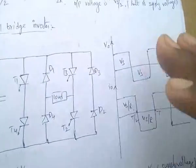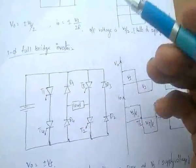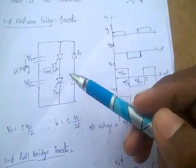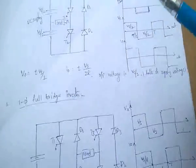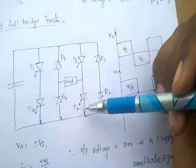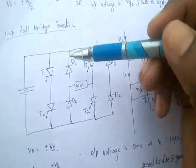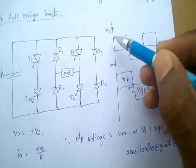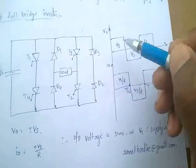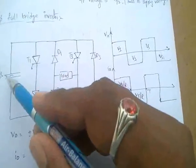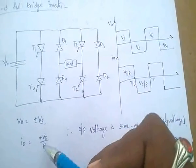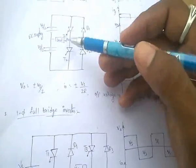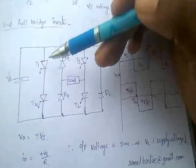In case of a full bridge inverter, the output voltage equals the supply voltage. In a single phase half-bridge inverter, two thyristors with two diodes form a bridge to convert DC to AC. In case of a full wave bridge inverter, there are four thyristors T1, T2, T3, T4 along with four diodes D1, D2, D3, D4. The output voltage V0 equals VS and I0 equals VS/R.